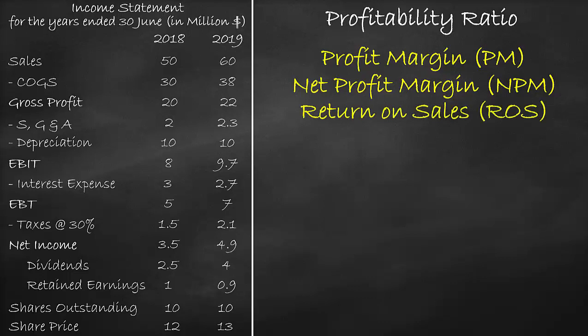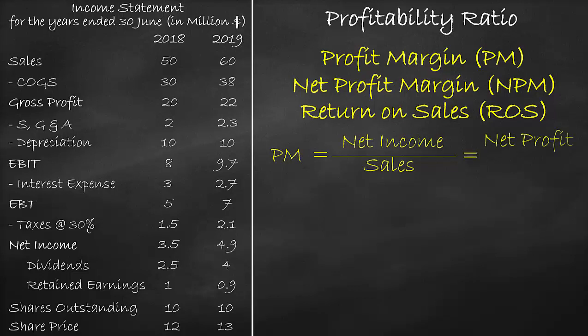The profit margin formula is net income divided by sales. Net income is also called net profit, so we can rewrite the profit margin formula as net profit divided by sales.